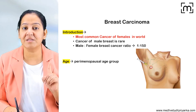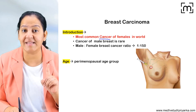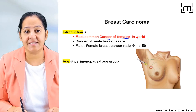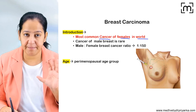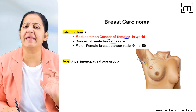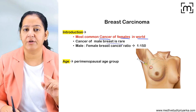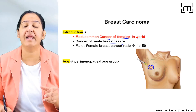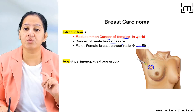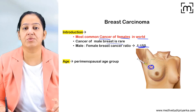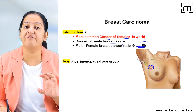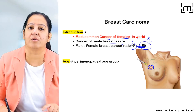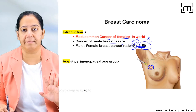Breast carcinoma is the most common cancer of females in the world. It occurs mainly in females; in males it is very rare. The male-to-female ratio is 1:150, so if it is occurring in 150 females, it can occur in one male also — rare of the rarest. It can occur in the male, but it is extremely uncommon.